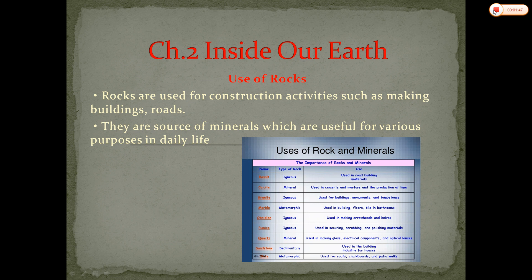Now the next part we are going to see is the uses of rocks. Rocks are used by humans for various activities such as making buildings, roads, and all kinds of construction. In this section, some uses of rocks are given — basalt rocks are used for construction of roads and buildings. Calcite, or limestone, is used for making cement and mortars.